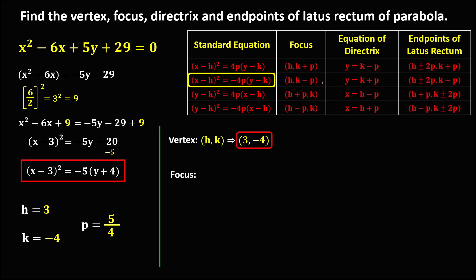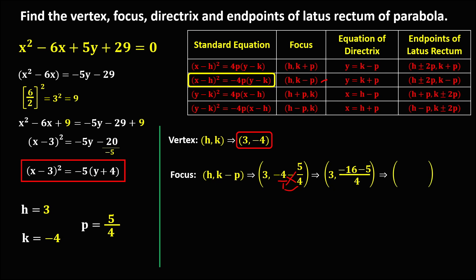For the focus, the formula is (h, k minus p). Substituting: h is positive 3, k is negative 4, minus p which is 5 over 4. To simplify using cross multiplication: negative 4 times 4 gives negative 16, and 1 times negative 5 gives negative 5, over 1 times 4 which is 4. Since both are negative, negative 16 plus negative 5 gives negative 21 over 4. So the focus is at (3, negative 21 over 4).